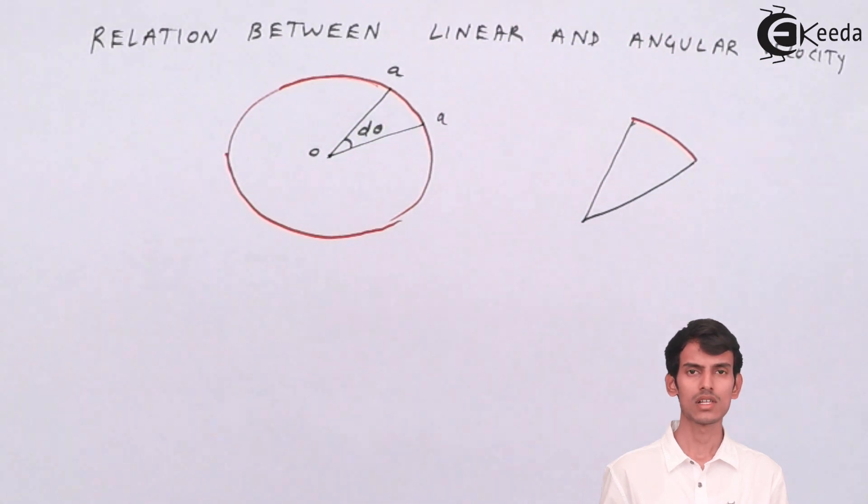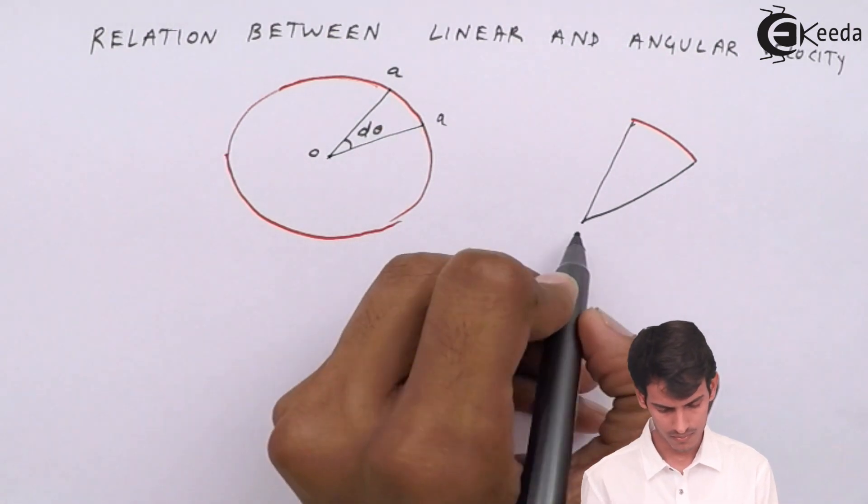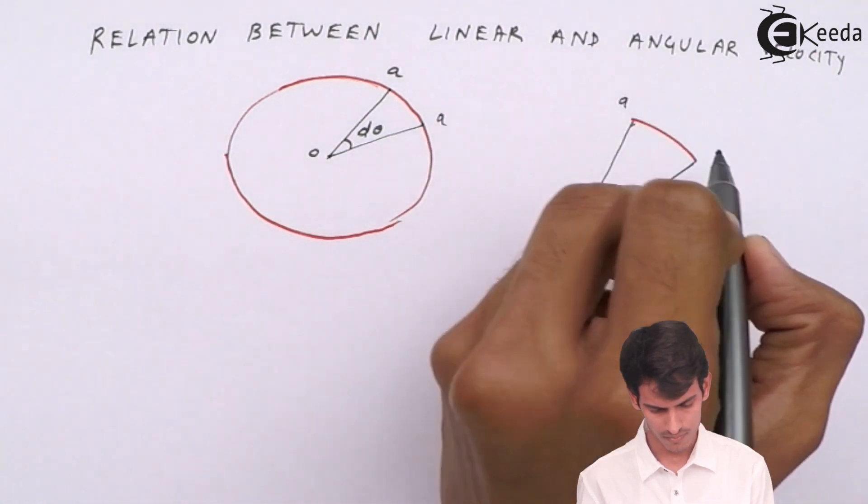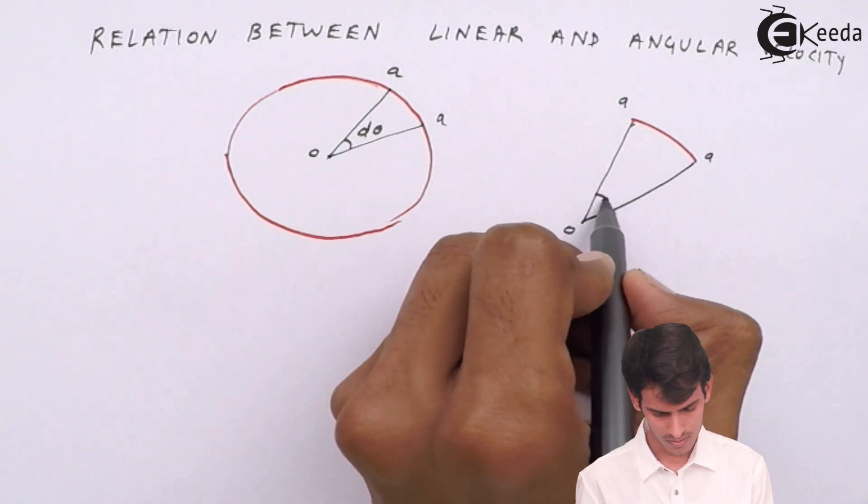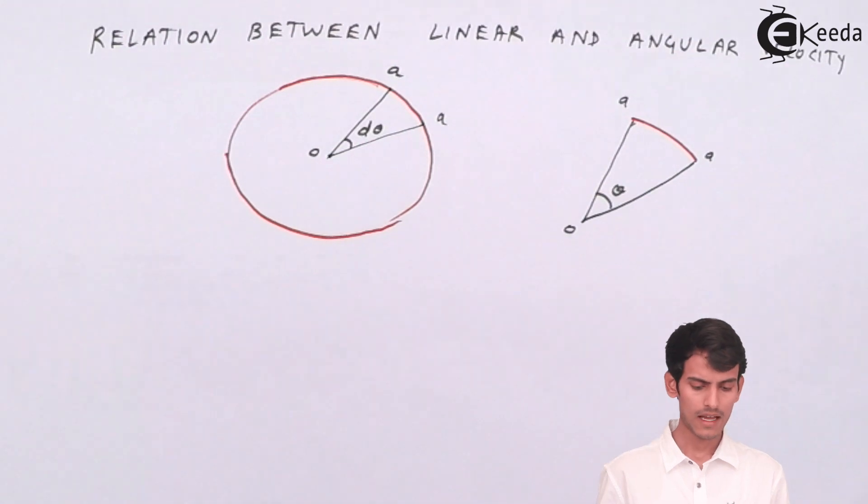So this is how it looks like if you remove it from the circle. If you just concentrate on the sector it will look something like this. The angle is theta and the red thing that you can see is the displacement, the linear displacement.